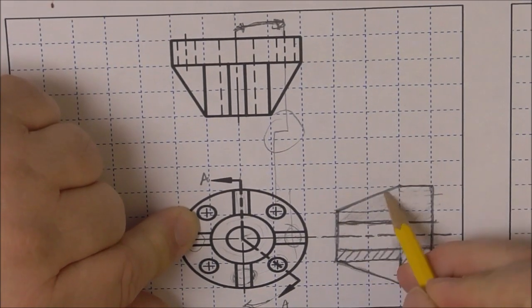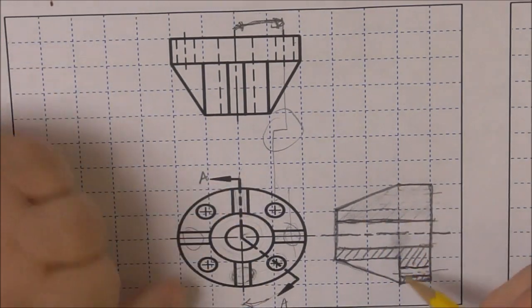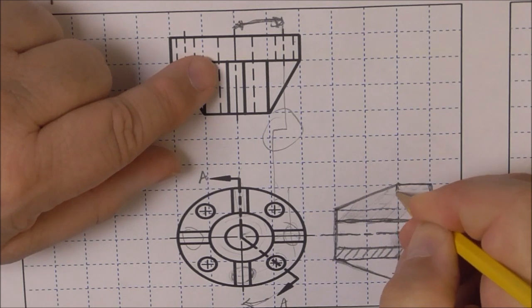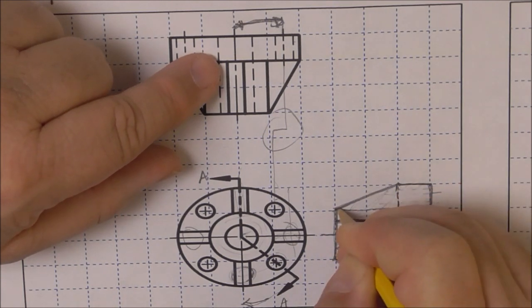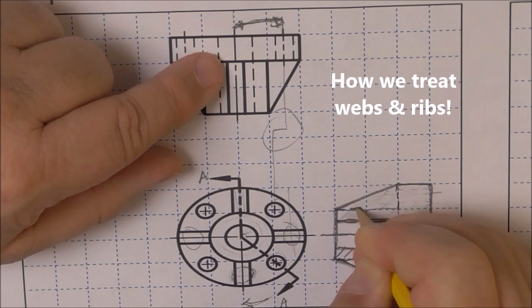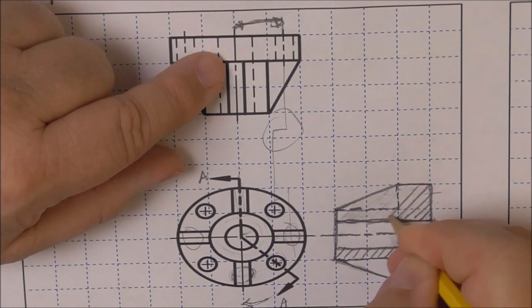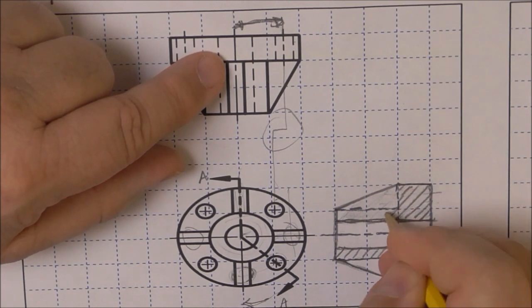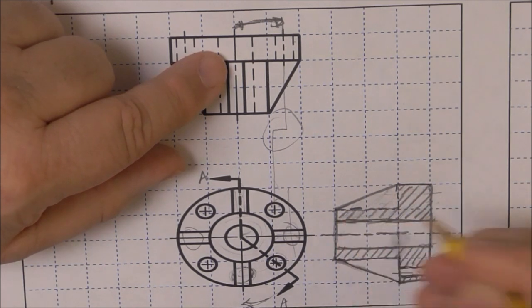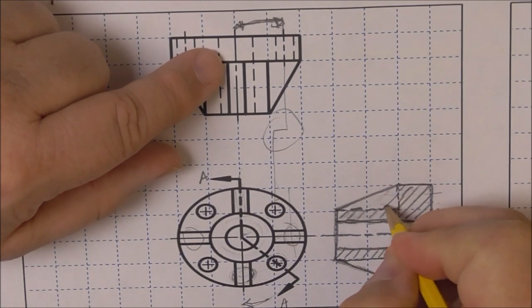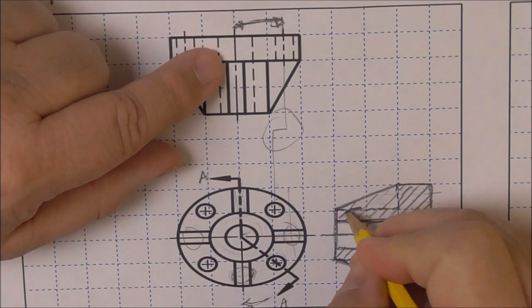But again, if we were to section this, this wouldn't look symmetrical. So this is what we normally do: we put a hidden line in for the fin, for the thin member. We would section this. I've seen it done like this before. In the book you may also see it with half the section lines thrown in here.